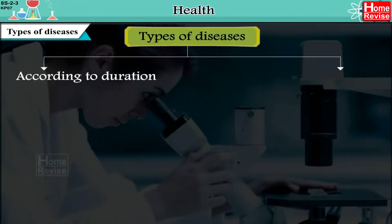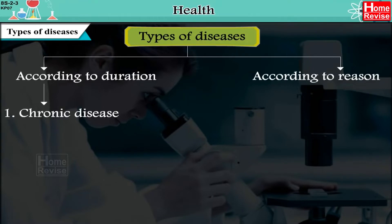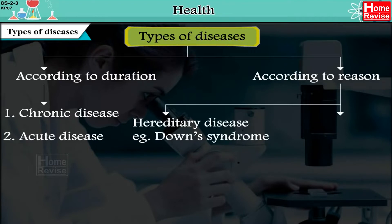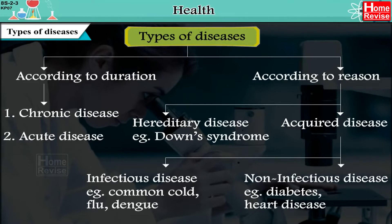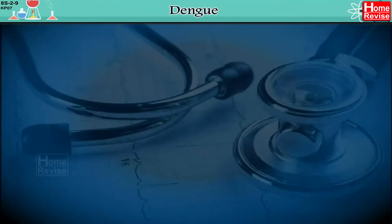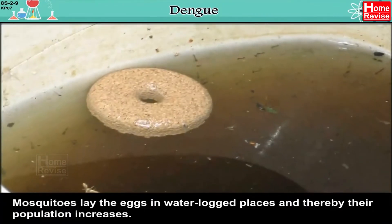Diseases are classified according to duration and according to reasons. According to duration, there are chronic diseases or acute diseases. According to reason, there are hereditary diseases — example: Down syndrome — or acquired diseases, which may be infectious diseases, example: common cold, flu, or dengue, or non-infectious diseases, example: diabetes and heart diseases.